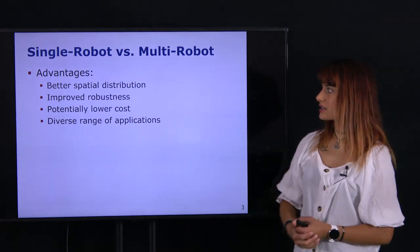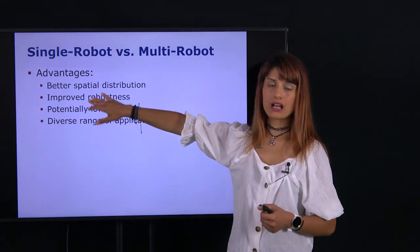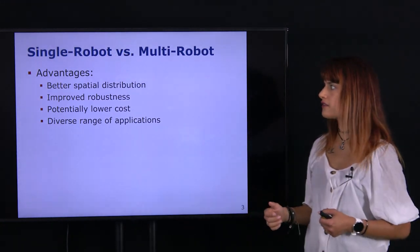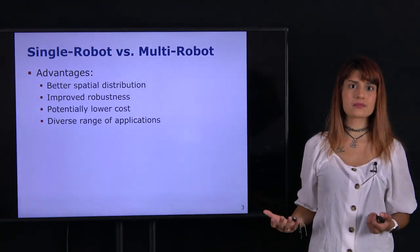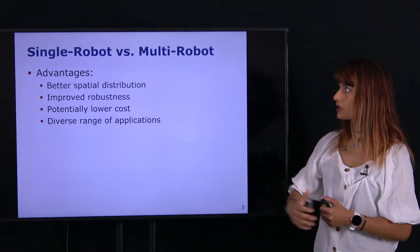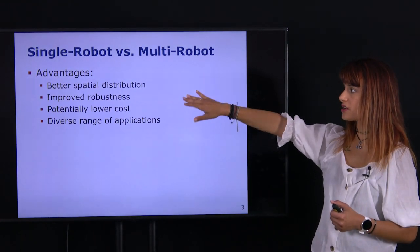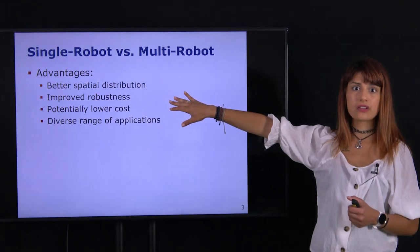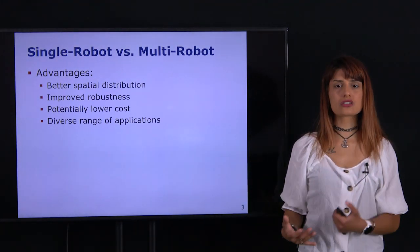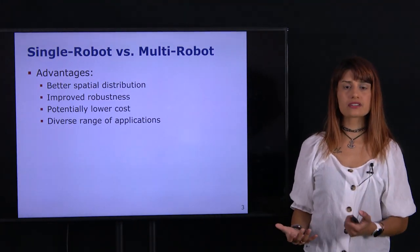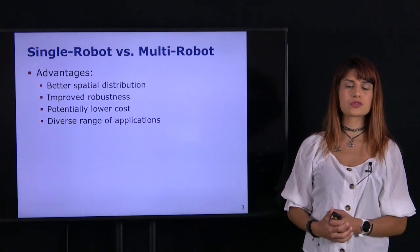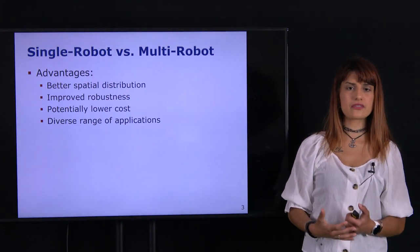Another aspect is robustness. If we have a single robot and it fails with no failure recovery mechanisms, our mission is over. Whereas if we have multiple robots and one fails, the others can replace or compensate for it in terms of actions, giving us a much less vulnerable and more robust system.